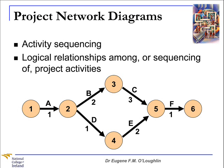A project network diagram is a technique for showing activity sequencing. It gives us a schematic display of the logical relationships among our sequencing of project activities. So every project can be broken down into activities. On our diagram here, we have six activities. These activities are labelled from A to F, and they represent the arrows that are on the diagram here.